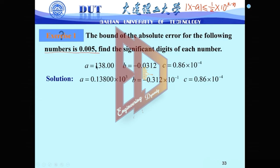For A, we write it in normalized form. We move the decimal place 1, 2, 3 places, giving 0.13800 multiplied by 10 to the 3, so k equals 3 for A. For B, we move to the right side just 1 place, so 10 to minus 1, giving k equals minus 1. For C, the normalized form is already 0.86 multiplied by 10 to the 4, so k equals 4.